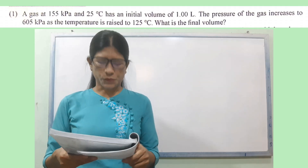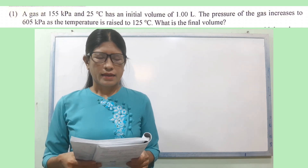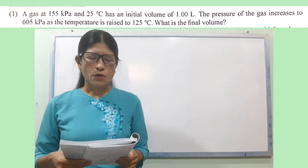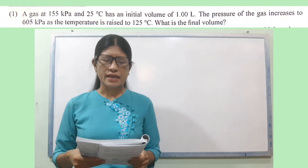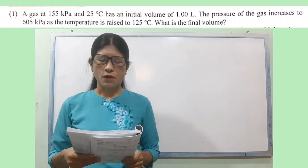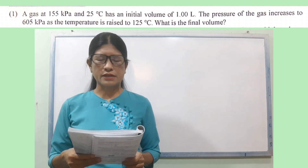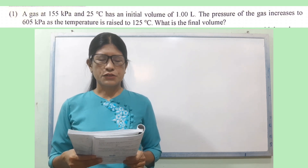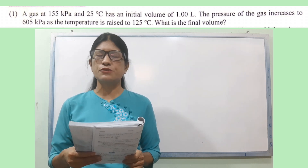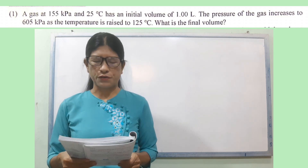Step 4, page number 11, review questions, number 1. A gas at 155 kPa and 25 degrees Celsius has an initial volume of 1.00 L. The pressure of the gas increases to 605 kPa as the temperature is raised to 125 degrees Celsius. What is the final volume?